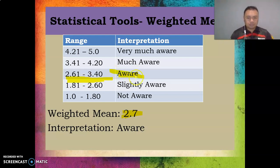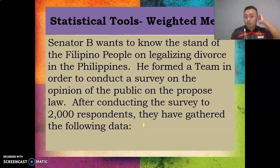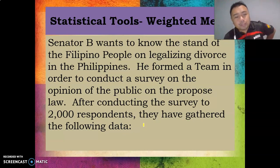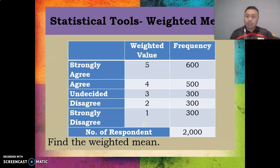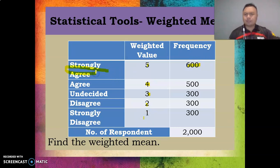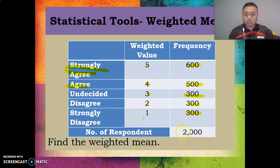Senator B wants to know the stand of Filipino people on legalizing divorce in the Philippines. He formed a team to conduct a survey of 2,000 respondents. The responses are: Strongly Agree (weighted value 5), Agree (4), Undecided (3), Disagree (2), Strongly Disagree (1). Frequencies: 600 Strongly Agree, 500 Agree, 300 Undecided, 300 Disagree, and 300 Strongly Disagree — totaling 2,000 respondents. Find the weighted mean.